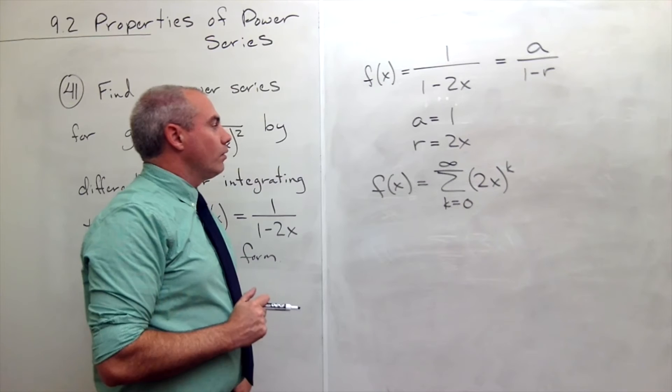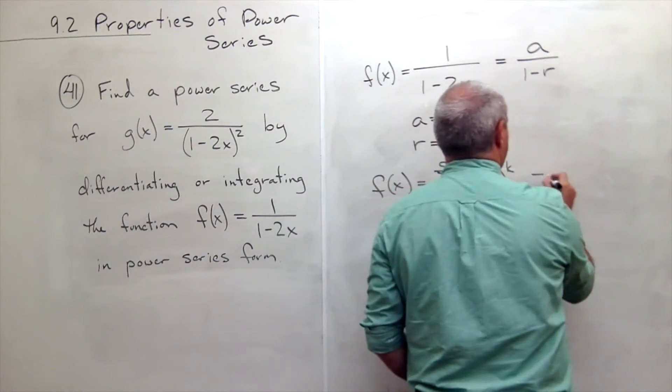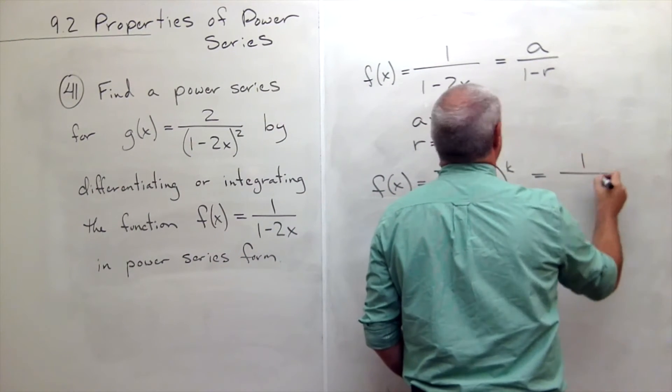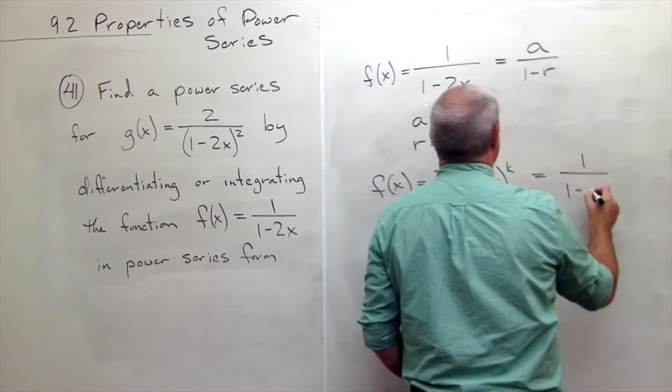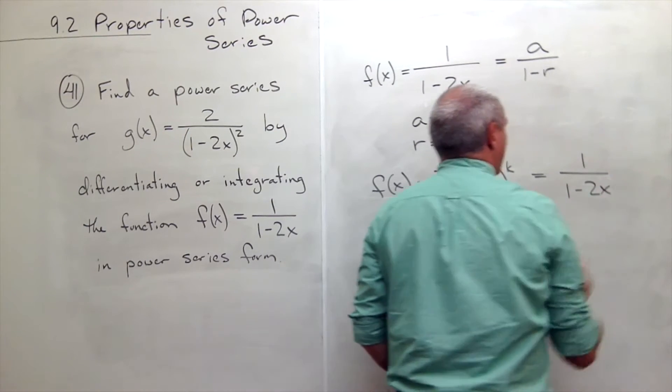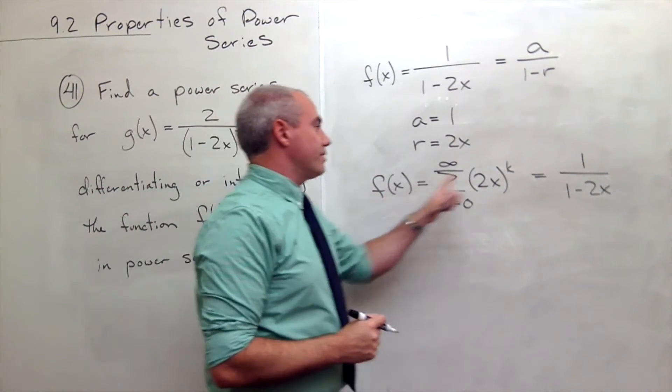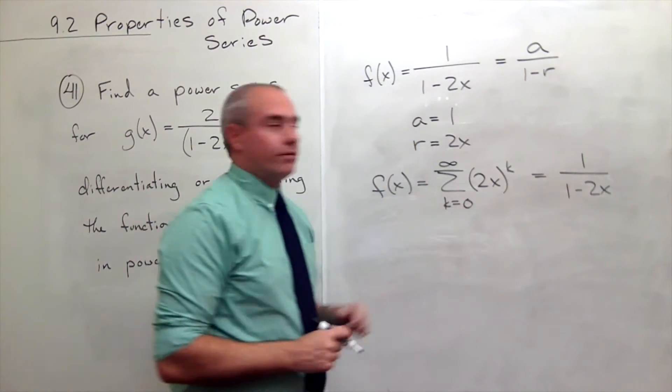Now, what I want to do, let me rewrite it the other way as well. This is 1 over 1 minus 2x. So f(x) is equal to this guy, which is also equal to this guy.